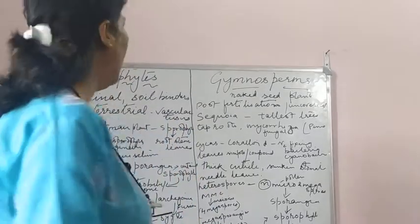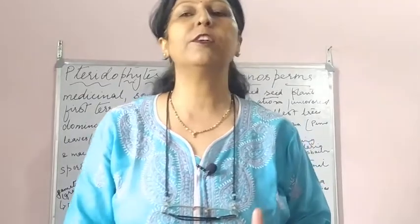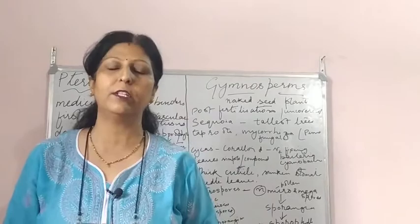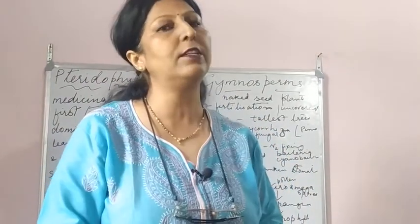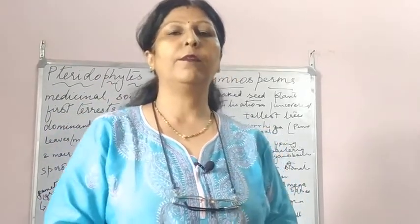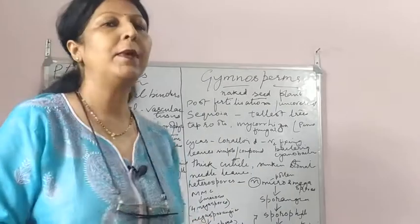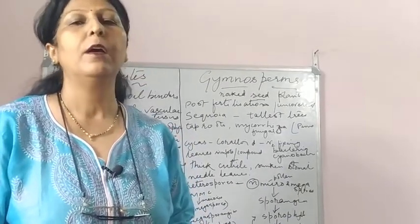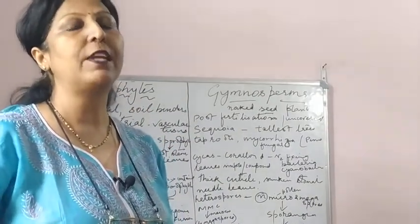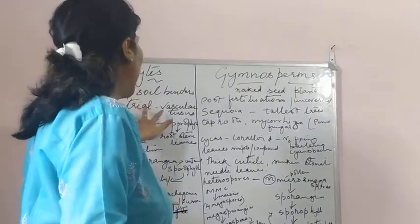Pteridophytes are the first plants with vascular tissues. As soon as we talk about vascular tissues, you understand that the tree may be a tall one with xylem and phloem. Many of them serve medicinal purposes and are soil binders because they have tap roots and can hold the plant firmly to the soil.